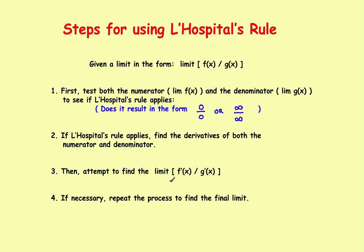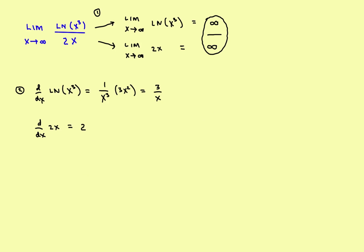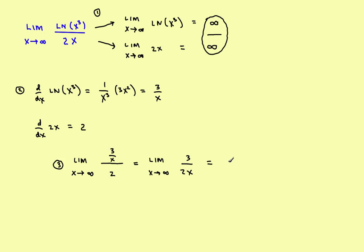Step three: find the limit of the quotient of the two derivatives. We find the limit as x approaches infinity of (3/x) divided by 2, which simplifies to the limit as x approaches infinity of 3 over 2x. As x goes to infinity, we have a very large number in the denominator, so the entire thing goes to zero. That's the solution to this first problem.